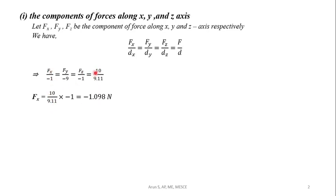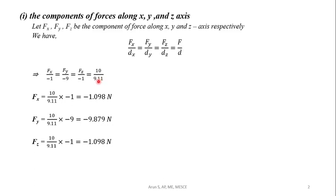fx will be equal to 10 divided by 9.11 into minus 1, so we get fx equals minus 1.098 Newton. Similarly, fy will be equal to 10 divided by 9.11 into minus 9, giving fy equals minus 9.879 Newton. And lastly, fz will be 10 divided by 9.11 into minus 1, giving fz equals minus 1.098 Newton. So the components of forces are fx equals minus 1.098 N, fy equals minus 9.879 N, and fz equals minus 1.098 N.